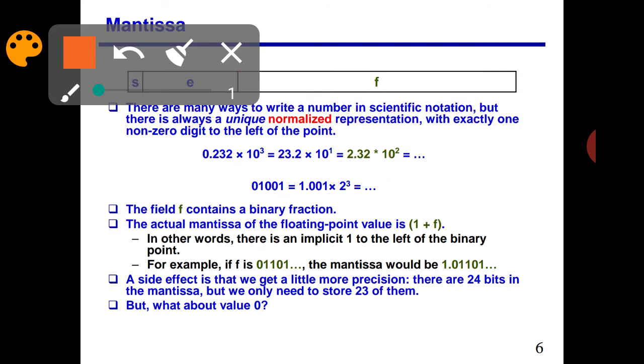The field f contains a binary number. The actual mantissa of the floating point is 1 plus f. In other words, there is an implicit 1 to the left of the binary point. Whatever f is, to its left side we put 1, and between them, decimal point when you read. For example, if f is 001010, the mantissa would be 1.001010. A side effect is that we get a little more precision. There are 24 bits in the mantissa, but we need only 23 of them.